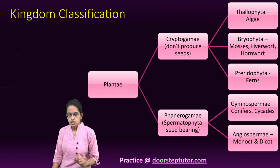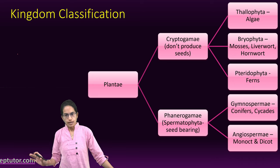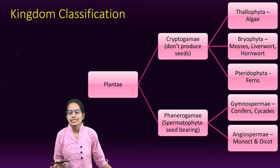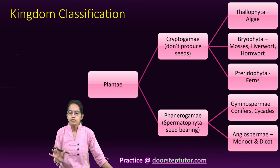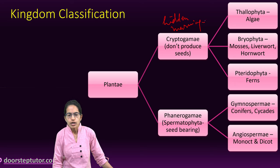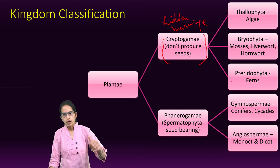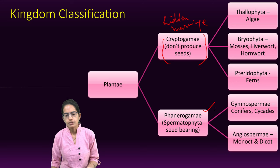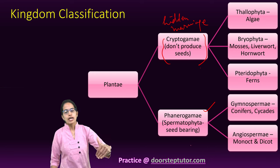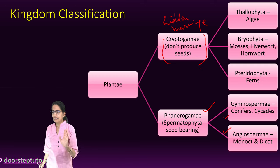Coming on to plant classification: we classify them as Cryptogamae and Phanerogamae. 'Crypto' means hidden and 'gamae' means marriage in Latin — so hidden marriage. 'Phanero' means visible, so Phanerogamae means visible marriage. Cryptogames are those which do not produce seeds. Under these we have three: Thallophyta, Bryophyta and Pteridophyta. Under Phanerogamae, which are seed-bearing, they are also known as Spermatophyta. These include Gymnosperms and Angiosperms.